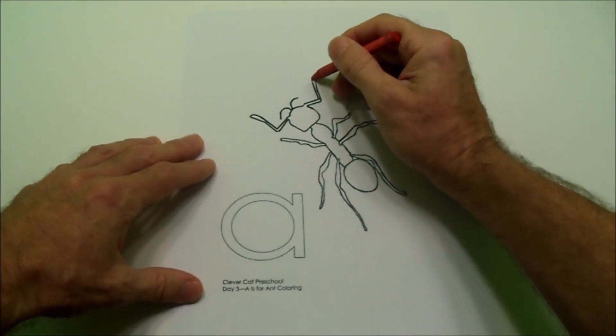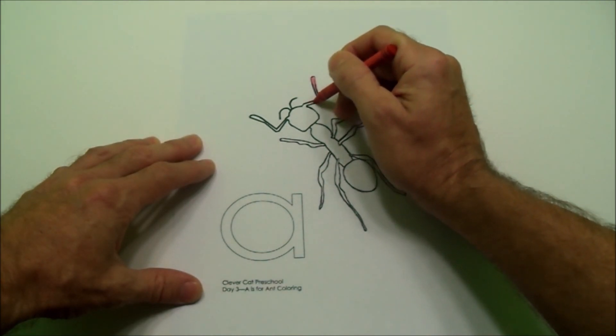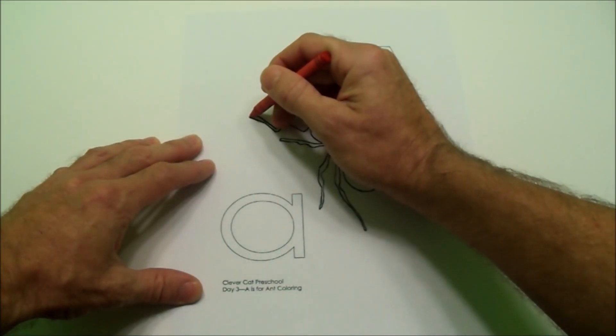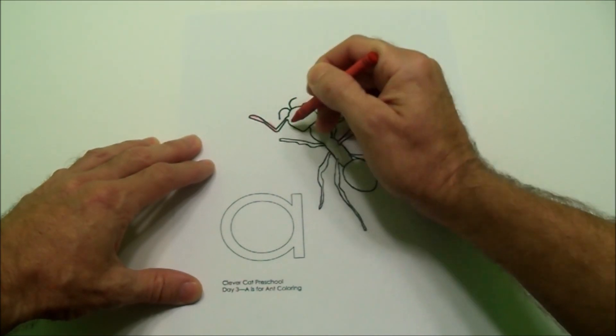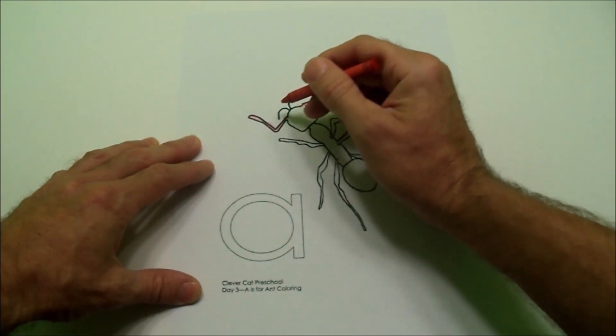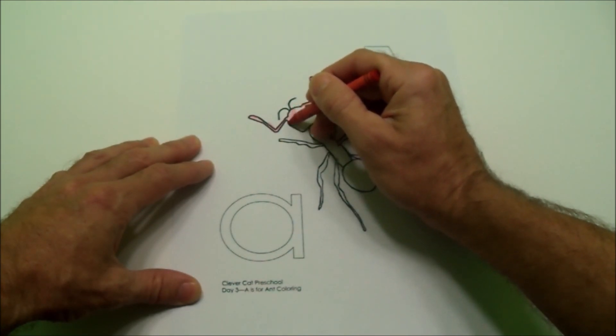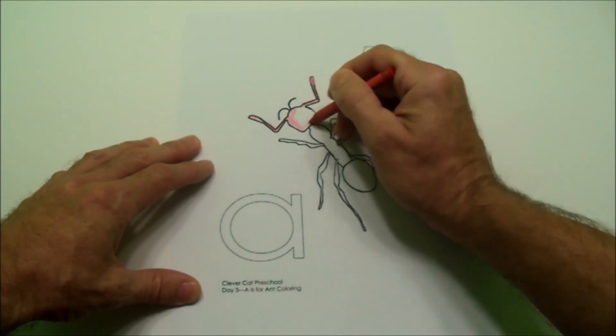It helps if you hold the paper with the other hand while you color. Try to stay between the lines. I am starting at the top and coming down, and then I am going across. Now I will color the head. You can change colors if you want. I am going to color mine all the same color and I am going to try to stay between the lines.